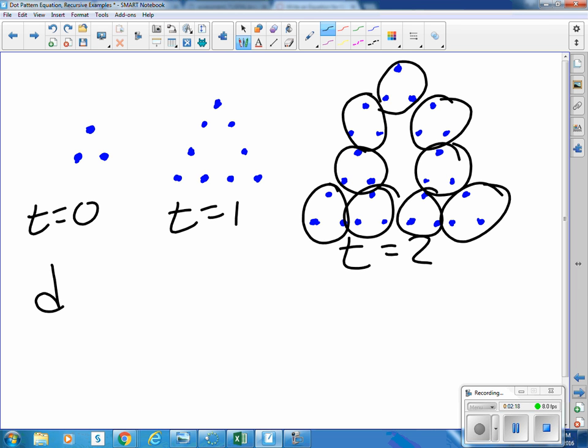So the number of dots is being multiplied by three each time. So I'm going to put three raised to the t, and how many dots do I have to start with?